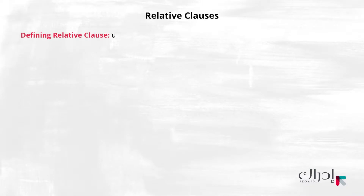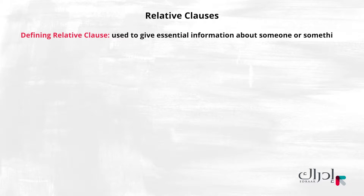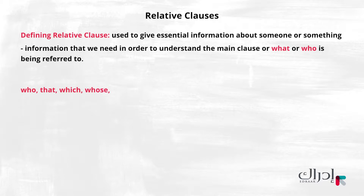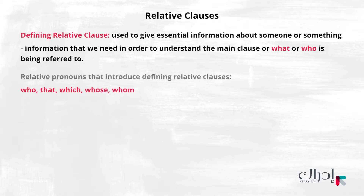A defining relative clause is used to give essential information about someone or something — information that we need in order to understand the main clause or who or what is being referred to. A defining relative clause usually comes immediately after the noun it describes. Who, that, which, whose, and whom are relative pronouns often used to introduce the defining relative clause.